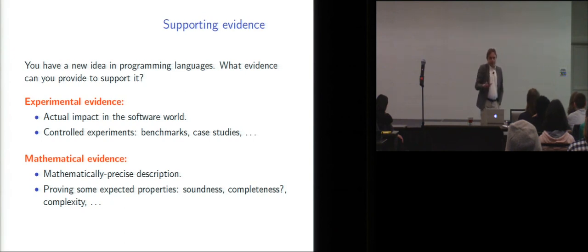And then the mathematical evidence is kind of complementary. Well, the first thing is, are you able to give a mathematically precise description of your idea? If not, maybe something is wrong and you need to rethink your idea in more details. And then using this mathematical description, can you prove some expected properties of your system? Maybe soundness, maybe completeness, maybe some complexity results.